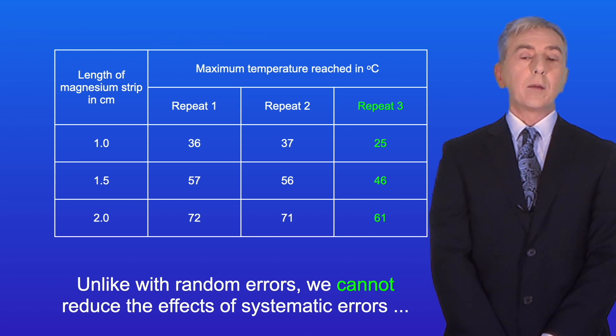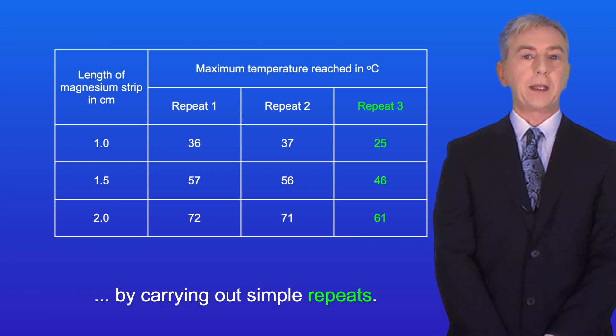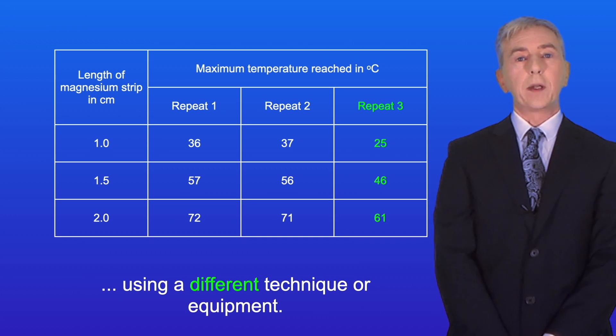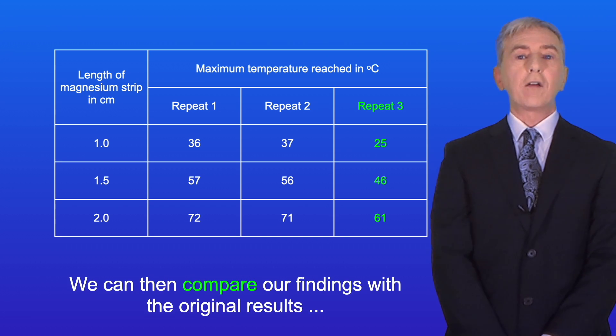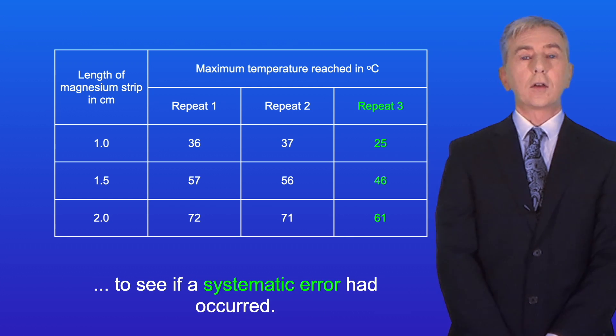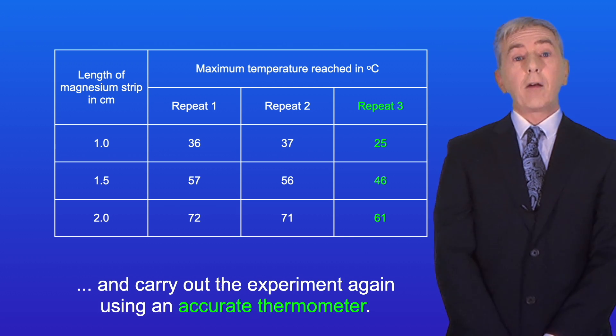Now unlike with random errors we cannot reduce the effects of systematic errors by carrying out simple repeats. If we suspect a systematic error then we have to do the experiment again using a different technique or equipment. We can then compare our findings with the original results to see if a systematic error had occurred. In this case the students should reject repeat three and carry out the experiment again using an accurate thermometer.